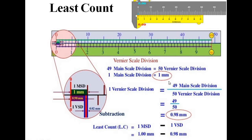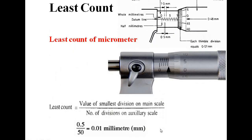One main scale division equals 1 mm. One vernier scale division equals 49 divisions of main scale within 50 divisions of vernier scale, hence 49 divided by 50 equals 0.98 mm. The least count is the difference between the two scales: main scale value is 1 mm and vernier scale value is 0.98 mm, so 1 minus 0.98 equals 0.02 mm. Hence the least count of the vernier caliper is 0.02 mm.